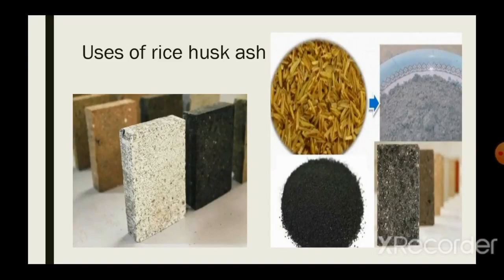Generally, rice husk in powder form can be used as a replacement for cement. Nowadays we use rice husk with some chemical admixtures to enhance its properties. We use rice husk ash because it has similar properties to cement — it is a pozzolanic material which contains a high amount of amorphous silica. Fly ash can also be used in concrete blocks.